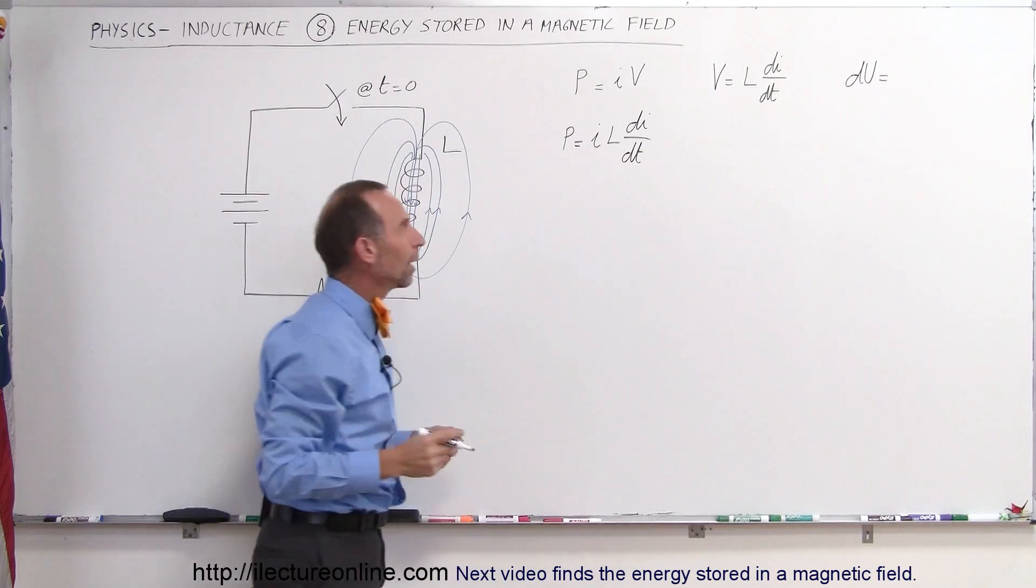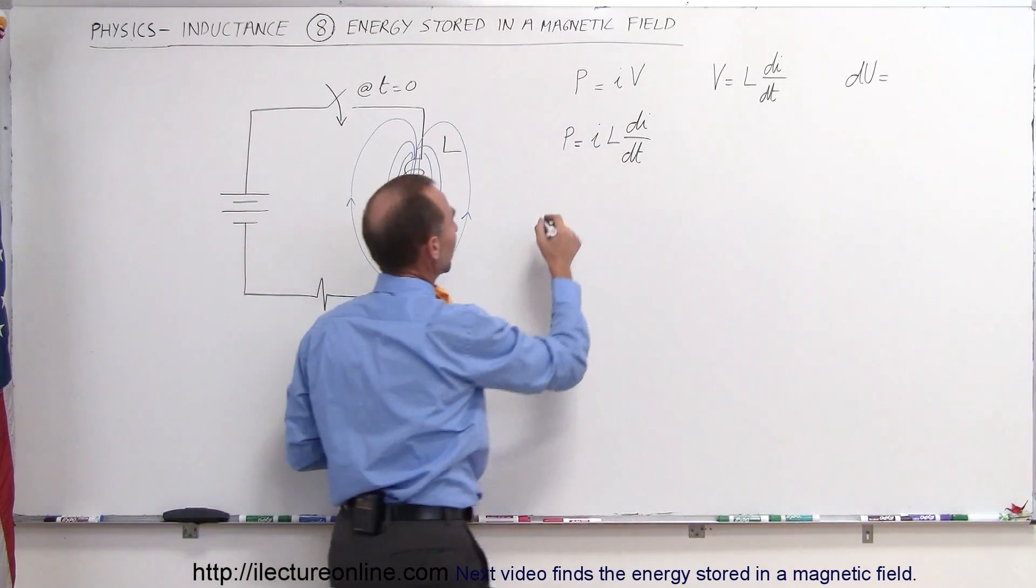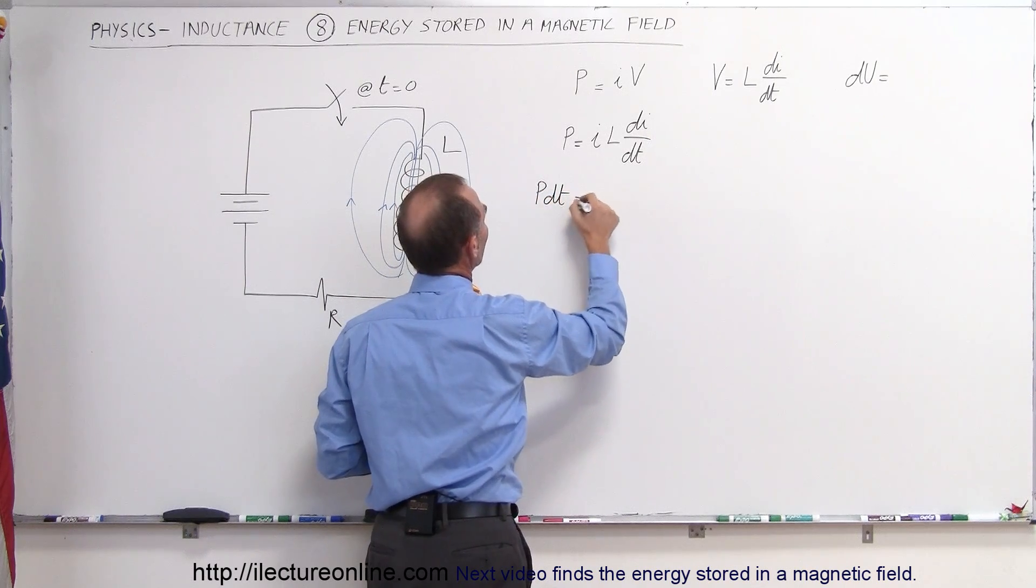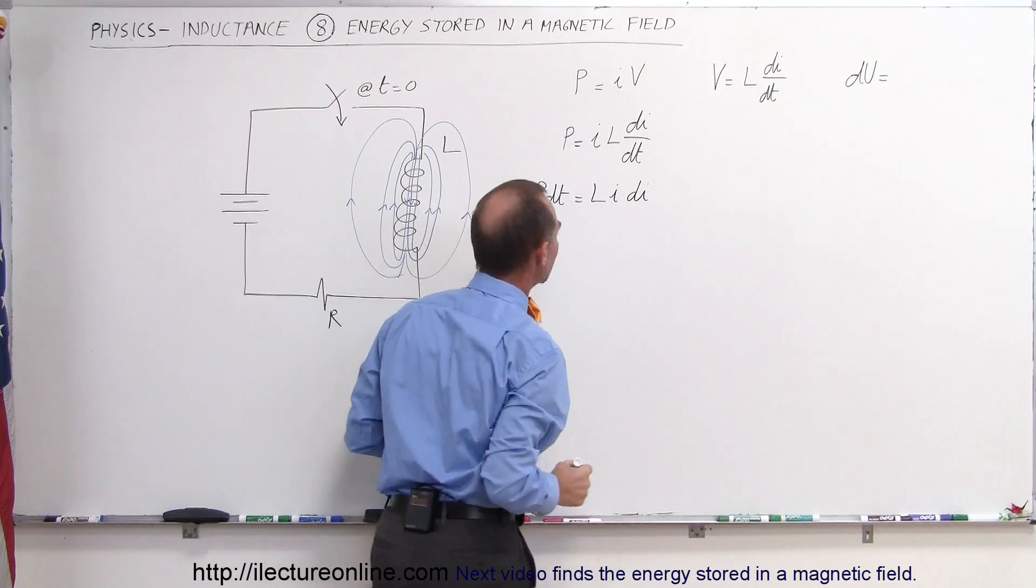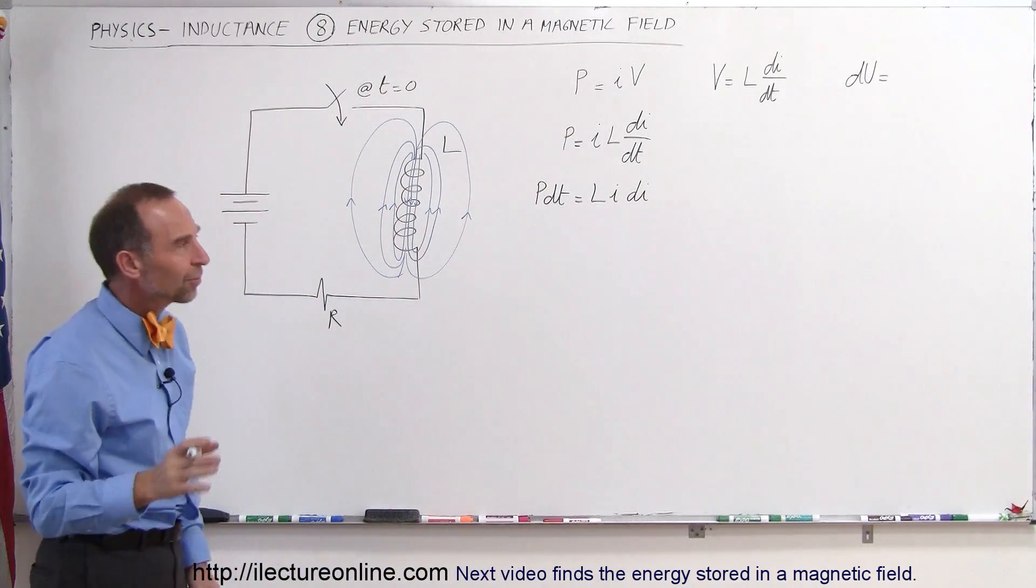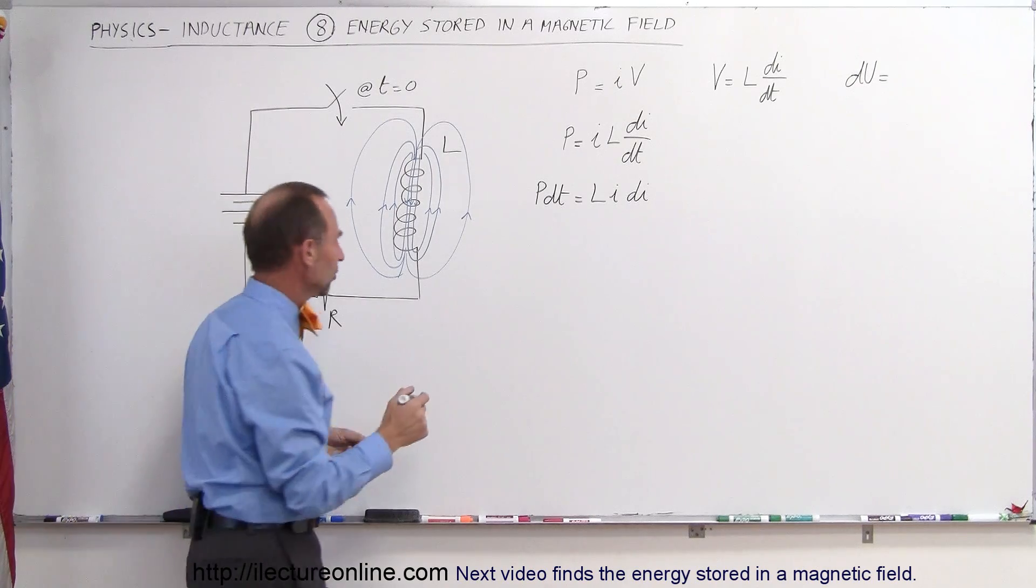And then we can say, well, we can take the dt and put it on the other side. We can say that the power times dt is equal to the constant L times I times dI. Now, what does power times dt mean? Well, remember the definition of power. There's another definition.